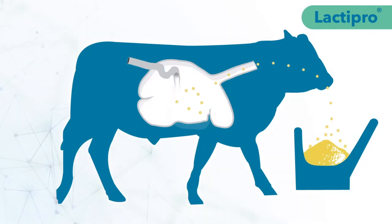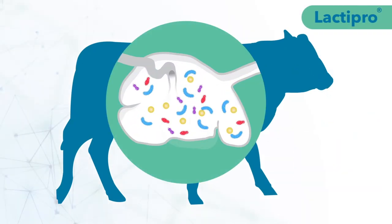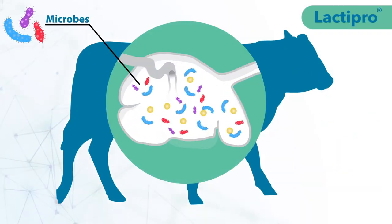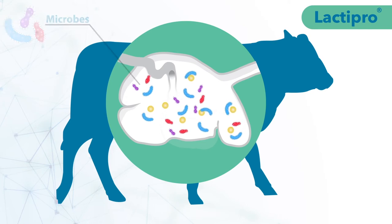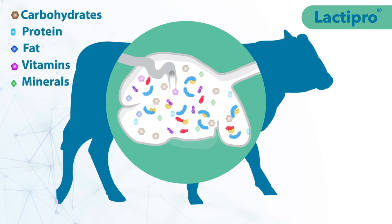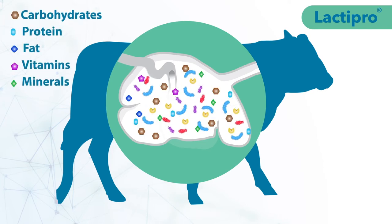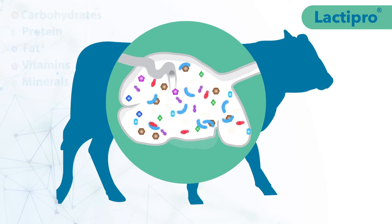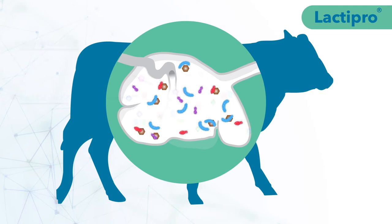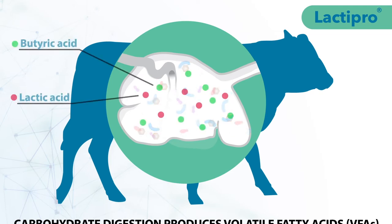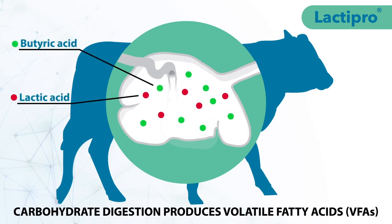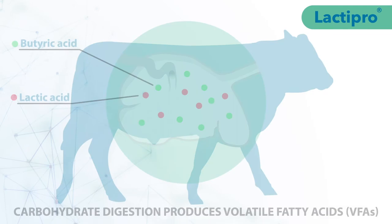When cattle consume feed, the rumen ferments it using billions of microbes to enable nutrient absorption. Carbohydrates are the main energy source in cattle feed. As microbes digest carbohydrates, they produce volatile fatty acids and organic acids.